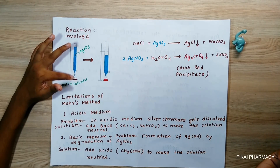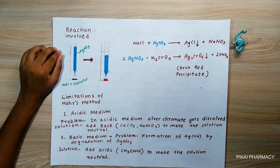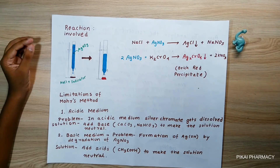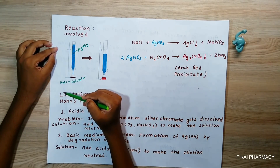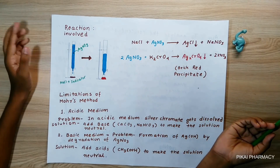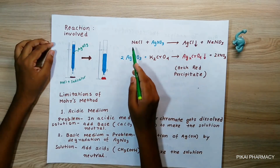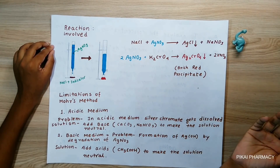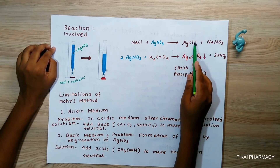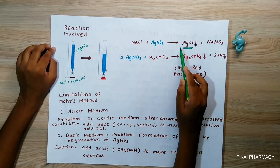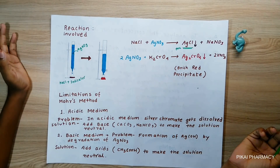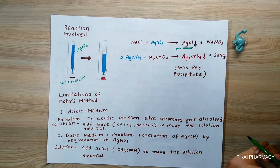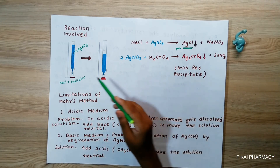When we open the burette, the AgNO₃ comes in a dropwise manner and reacts with the NaCl present inside the conical flask. A double displacement reaction occurs, forming AgCl and NaNO₃. The AgCl forms a precipitate that settles down in the conical flask. The AgNO₃ solution keeps falling into the conical flask, reacting with NaCl to form this AgCl precipitate.